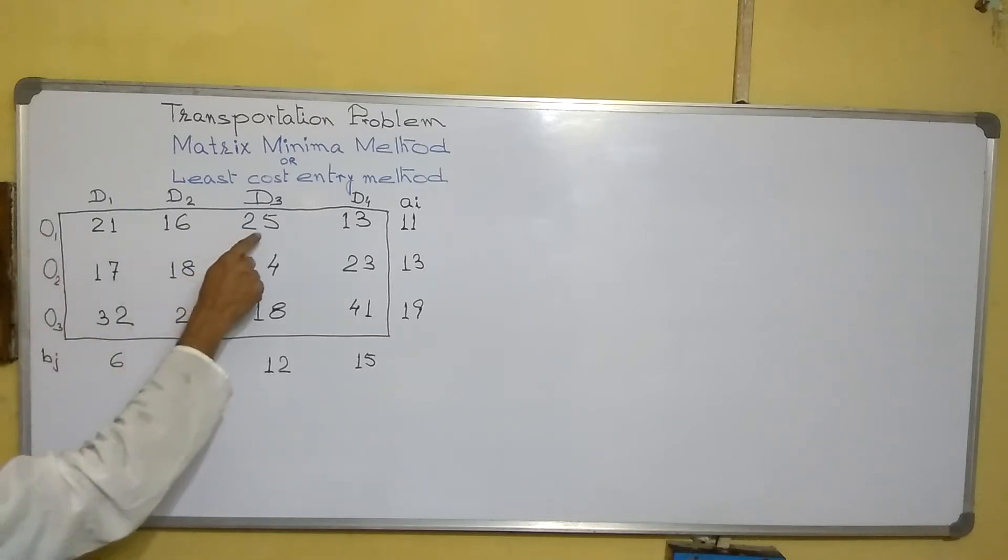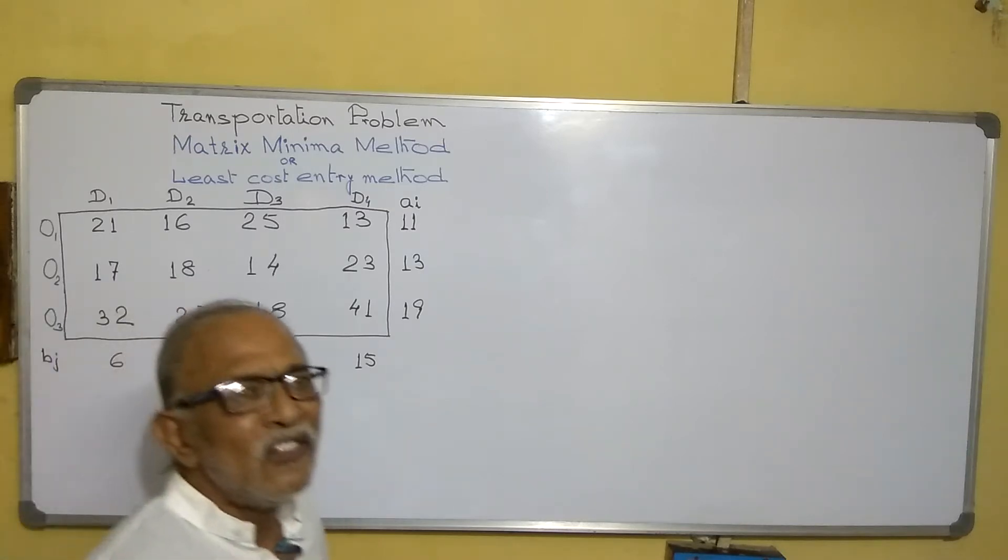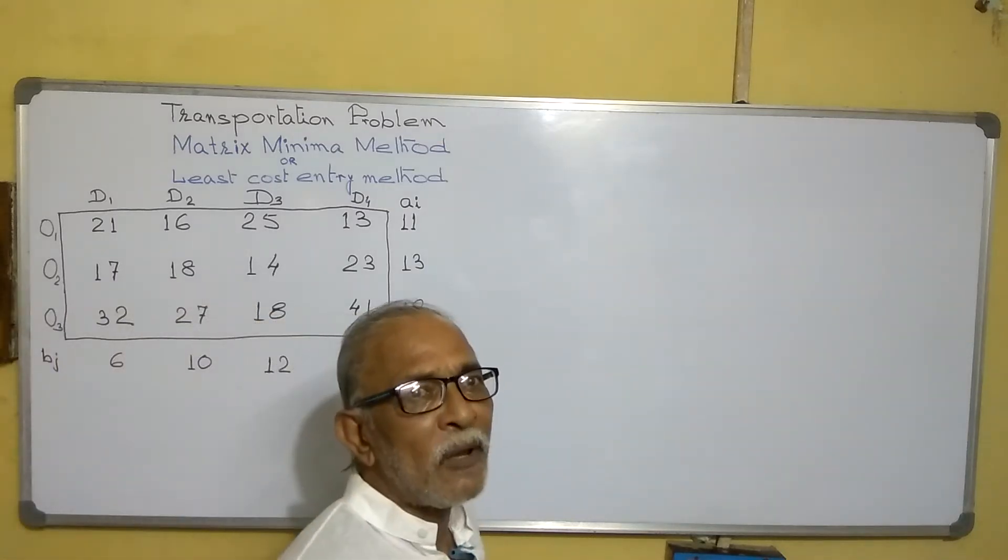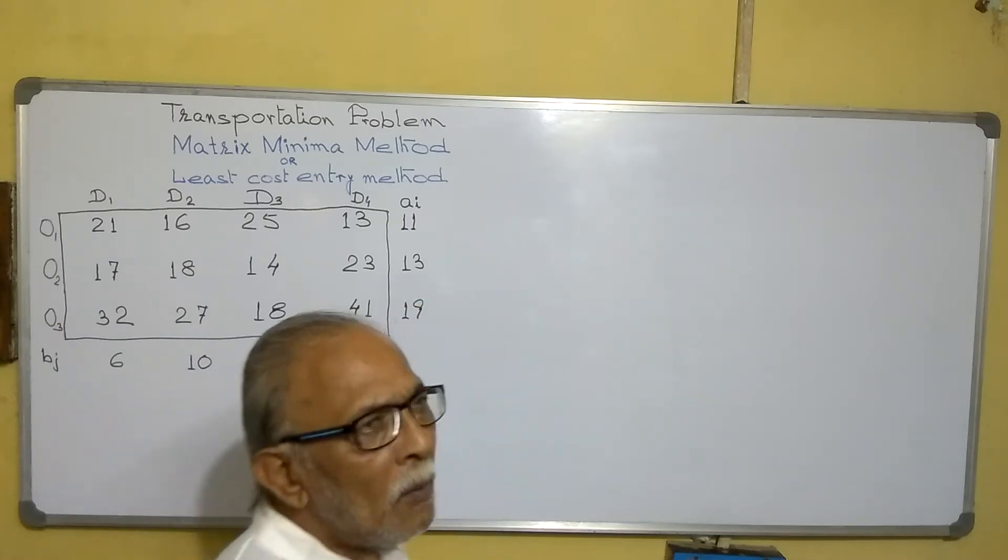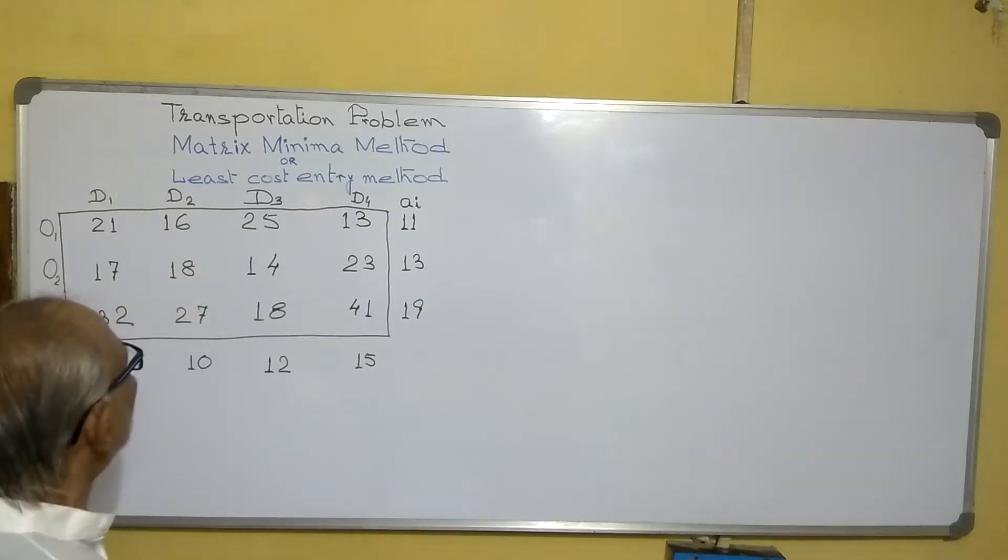Similarly, origin 1 to destination 3, cost per unit will be 25. Origin 3 to destination 2, cost per unit will be 27. In this way. So in this method, while supplying, what we are doing,